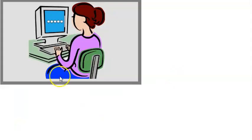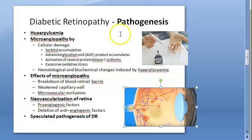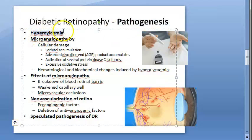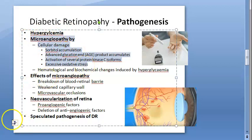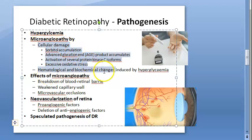We are moving on to the pathogenesis - what exactly happens. Hyperglycemia is the starting point: excess sugar, glucose levels are high. This is the starting point of diabetic retinopathy. Now the second point is microangiopathy. Basically the capillaries, arterioles, and venules are all damaged. The biggest cause is the hyperglycemia, leading to cell damage.